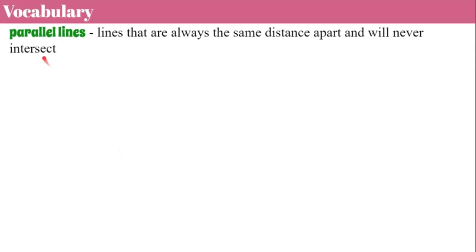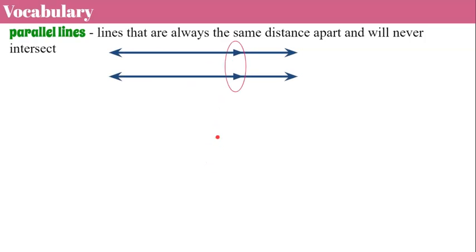Here are some vocabulary words. Parallel lines are lines that are always the same distance apart and will never intersect. We have parallel lines here, and they will never intersect because every corresponding point is equidistant. Think of parallel bars — they will never intersect. The arrows on the lines are an identifier; they tell you that the lines are parallel. If you see this on a set of lines, that symbol is telling you they are parallel.